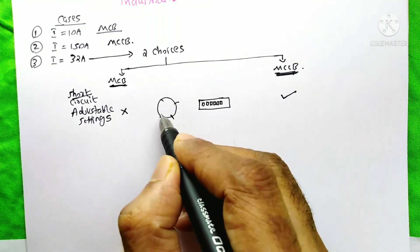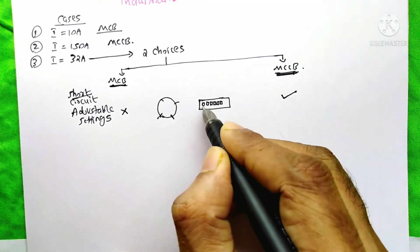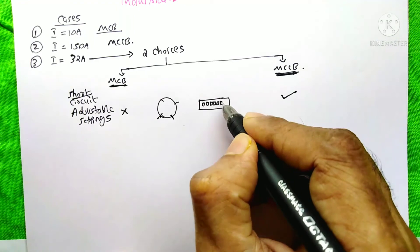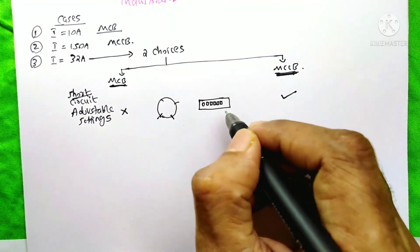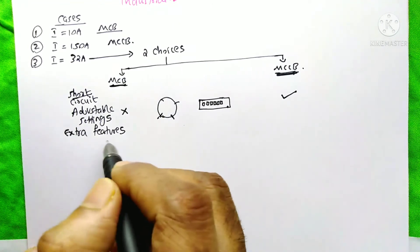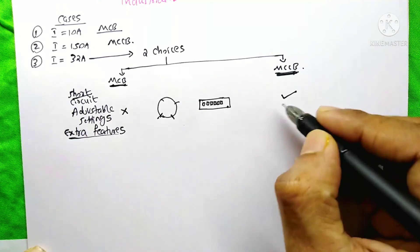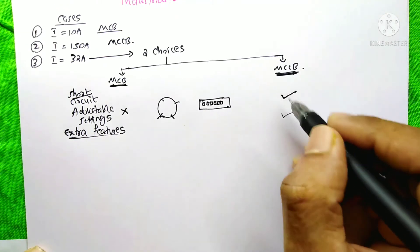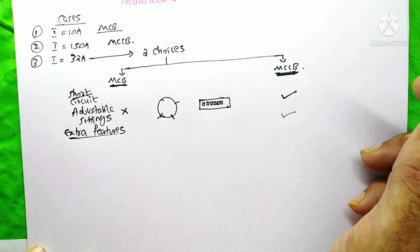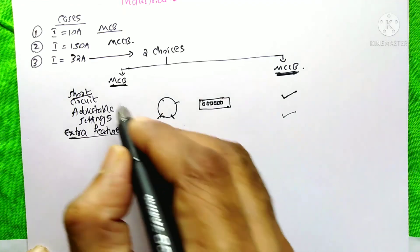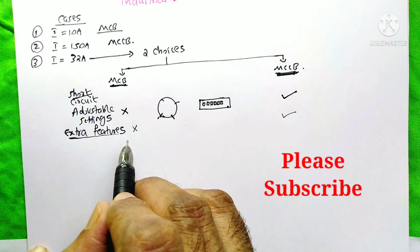Some companies offer a dial pad on top of the MCCB so you can select different current values, while others provide a series of knobs that you can move up or down to select different current ratings. If you need extra features such as over-frequency protection and under-frequency protection, you should select the MCCB, since it offers these extra features. The MCB does not have any such extra features.